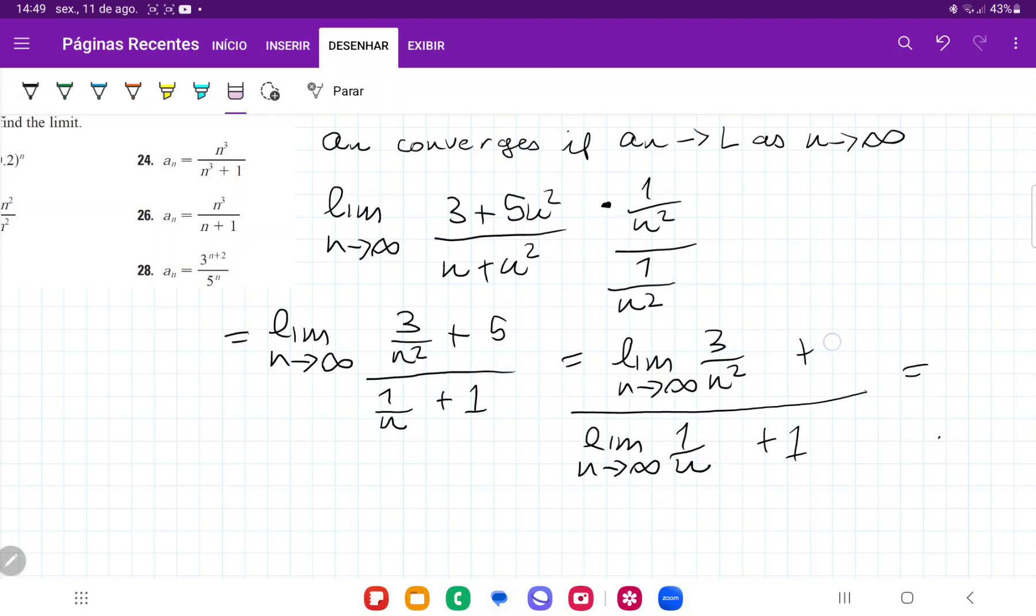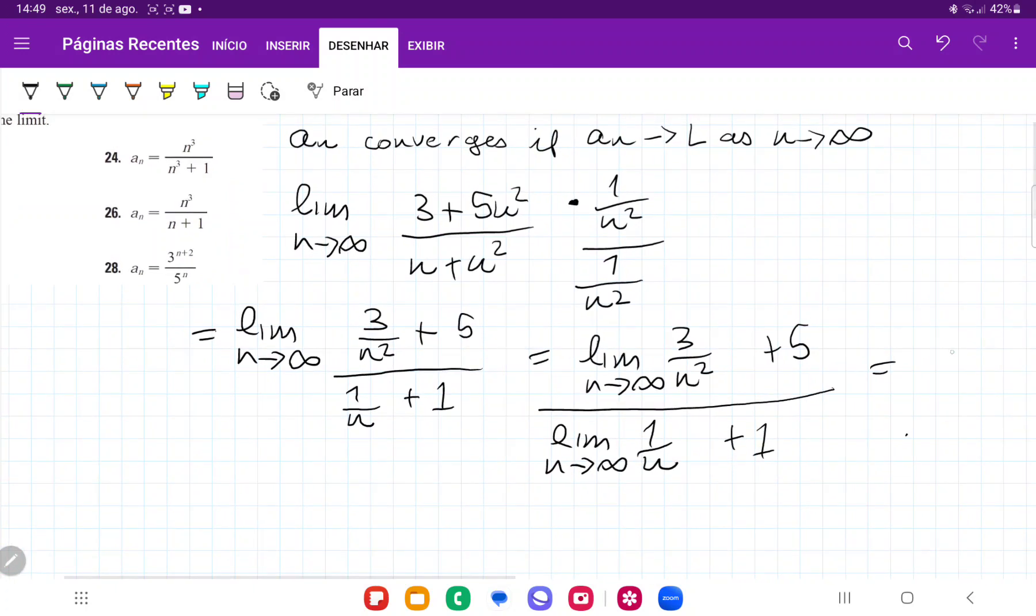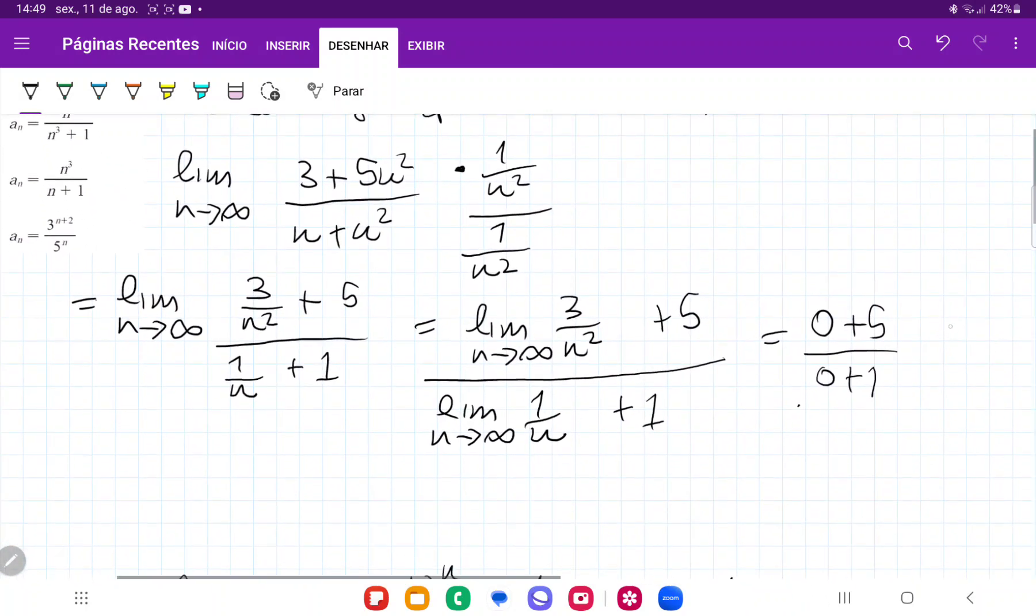And so this is equal to, let's see, that should have been plus 5, not plus 1, plus 5 here. So that is going to be equal to 0 plus 5 over 0 plus 1, which is just equal to 5.